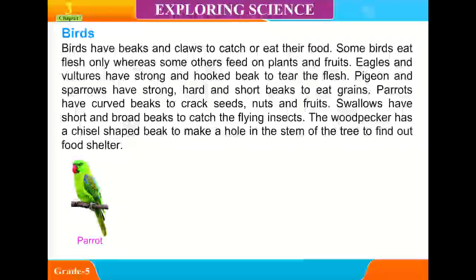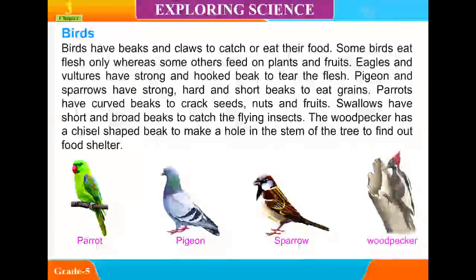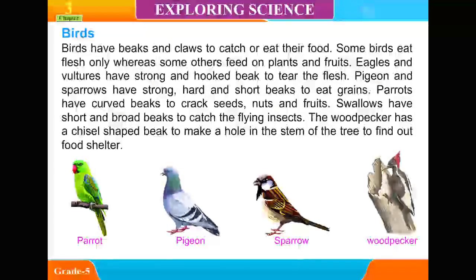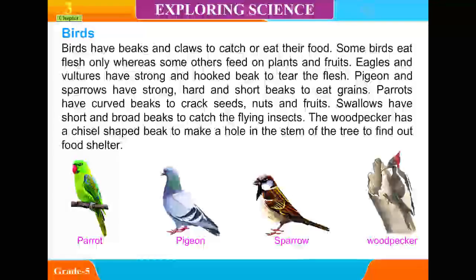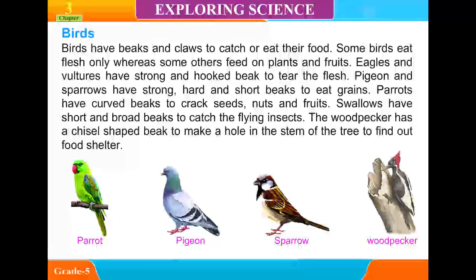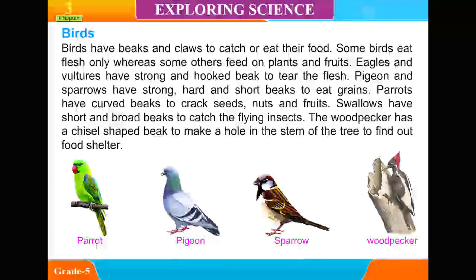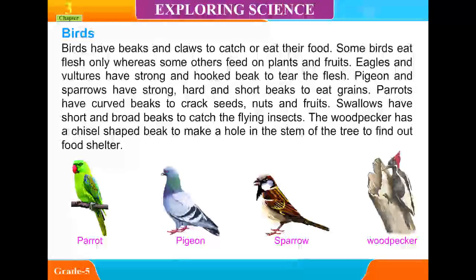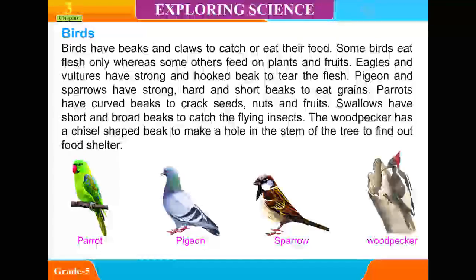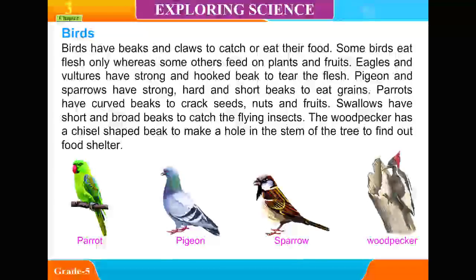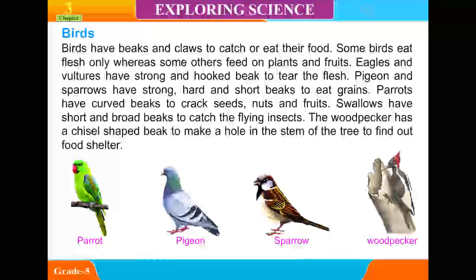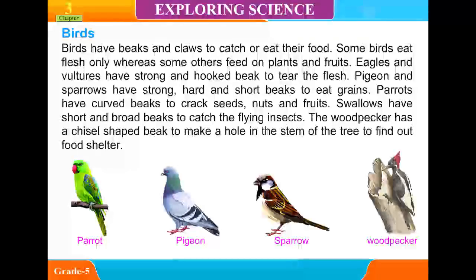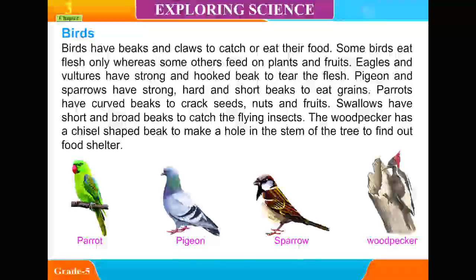Birds: Birds have beaks and claws to catch or eat their food. Some birds eat flesh only, whereas some others feed on plants and fruits. Eagles and vultures have strong hooked beaks to tear flesh. Pigeons and sparrows have strong sharp beaks to eat grains. Parrots have curved beaks to crack seeds, nuts, and fruits. Flamingos have short broad beaks to catch small insects. The woodpecker has a chisel-shaped beak to make holes in tree stems to find food and shelter.